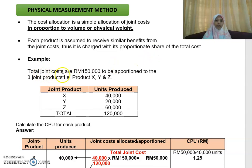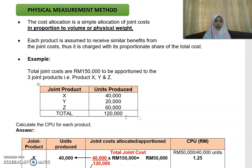For example, you have a total joint cost of RM150,000 that you want to apportion to three joint products: product X, Y, and Z. The quantity for X is 40,000 units, for Y is 20,000 units, and for Z is 60,000 units, giving a total of 120,000 units produced. Physical measurement can be any volume or quantity — meters, liters, or any physical weight that you have.